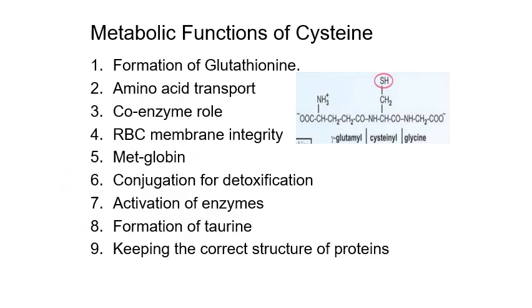The major metabolic functions of cysteine include: formation of glutathione and its role in amino acid transport through the gamma-glutamyl cycle; coenzyme A synthesis; RBC membrane integrity through glutathione formation; methemoglobin reduction; conjugation for detoxification; enzyme activation; formation of taurine; and maintaining the correct structure of proteins through disulfide bonds.